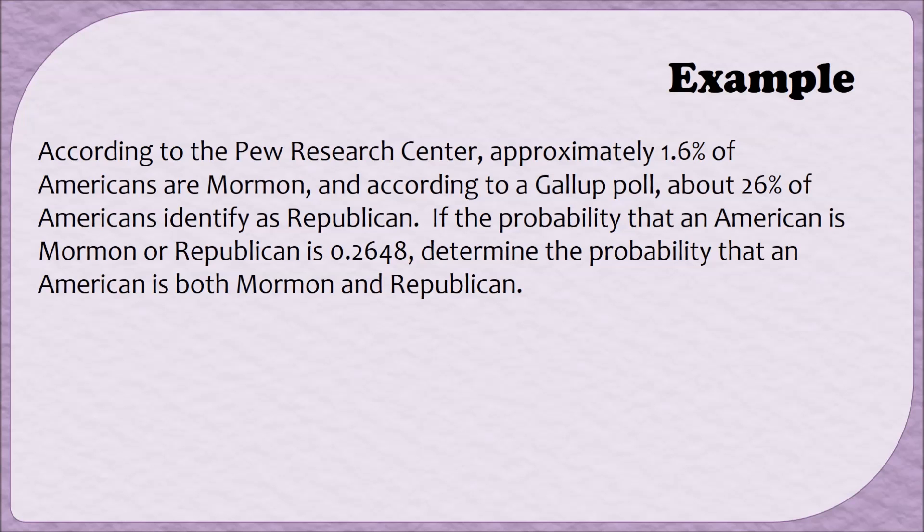Here's how I've decided to summarize the information. Reading through the paragraph again, I notice that about 1.6 percent of Americans are Mormon. In this case, the event is being Mormon, so I'm going to use M to symbolize this. So the probability of M is 0.016. Then, according to the Gallup poll, about 26 percent of Americans identify as Republican. Since this event is dealing with Republicans, I'm going to use a capital R. So the probability of R is 0.26.